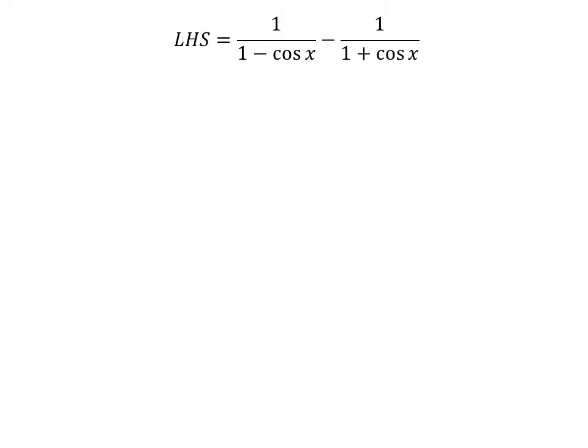Let us start from the left hand side of the identity. The left hand side is equal to 1 upon 1 minus cosine of x, minus 1 upon 1 plus cosine of x.